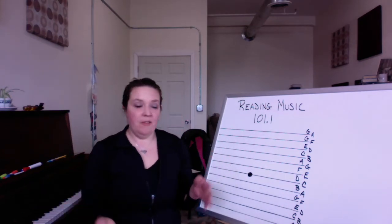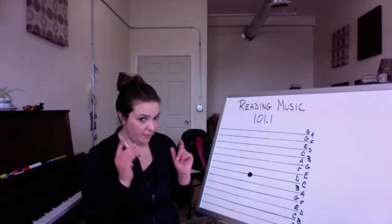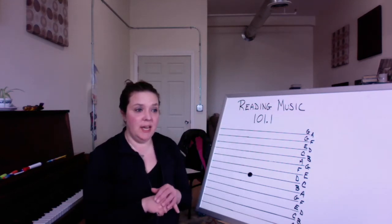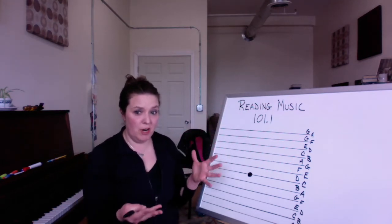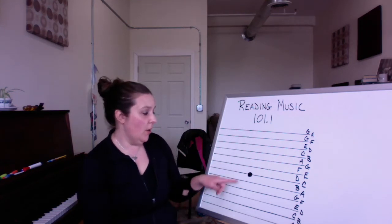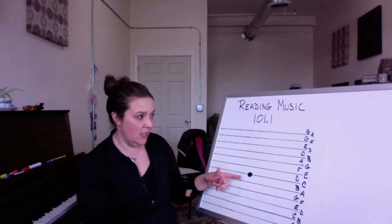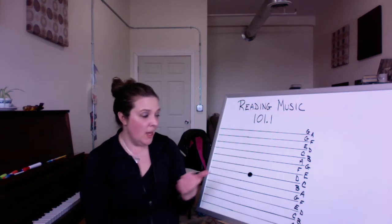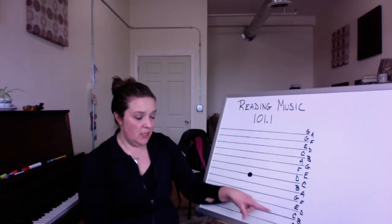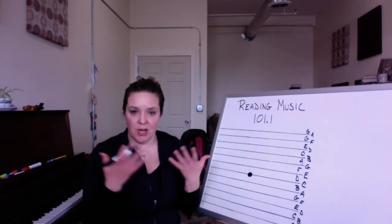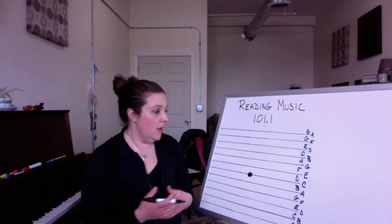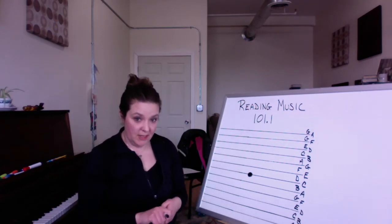So we have all of this information, but we don't have anything to tell us. This is a lot, right? This is the C, but which C is it? I've got a bunch of Cs on a keyboard. I see a whole bunch of Cs here. This is a lot to try to take in when you're looking at music. So we're going to simplify things a little bit.